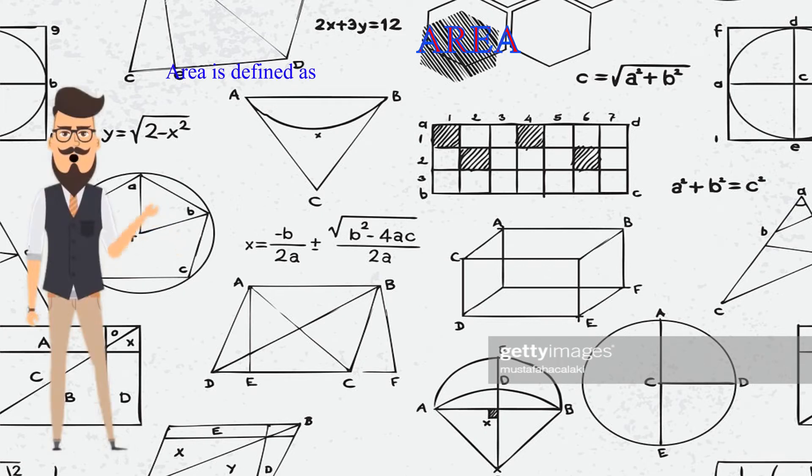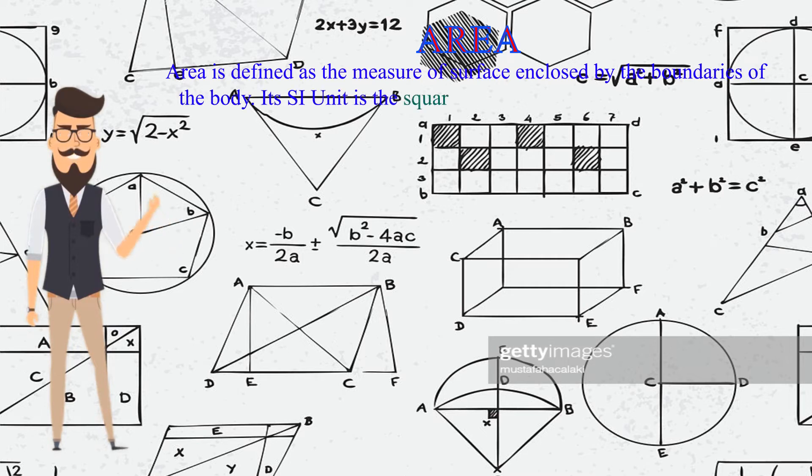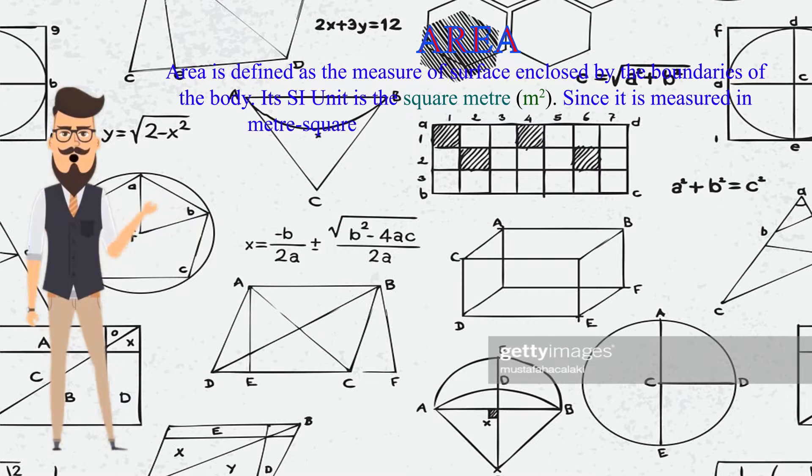Area is defined as the measure of surface enclosed by the boundaries of the body. Its SI unit is the square meter, m squared. Since it is measured in meter square, m squared, this means it's a derived quantity.